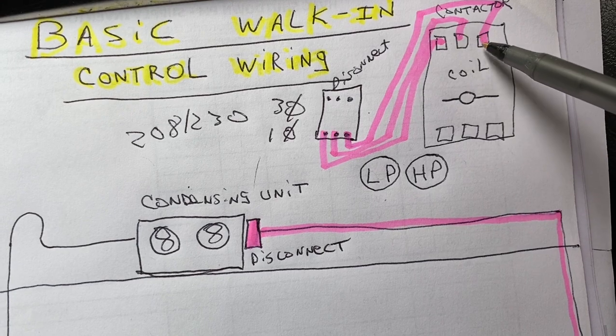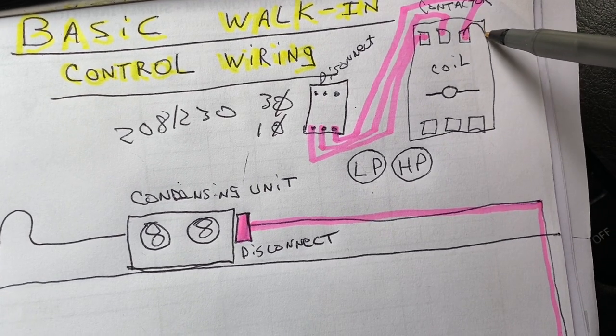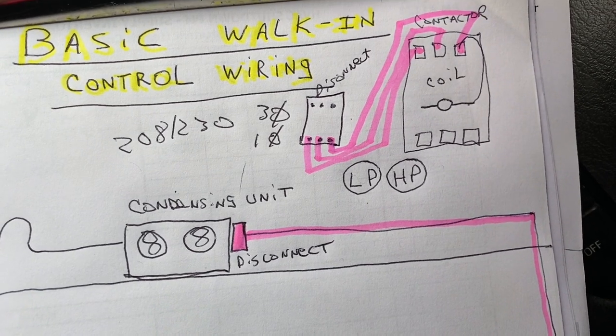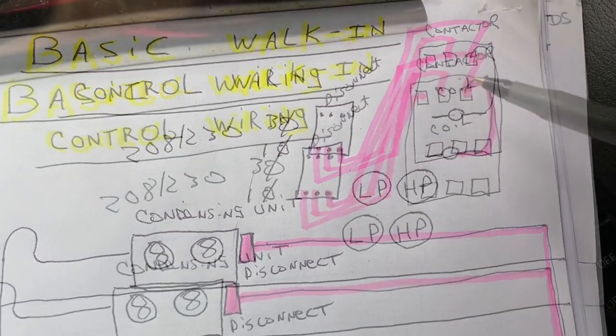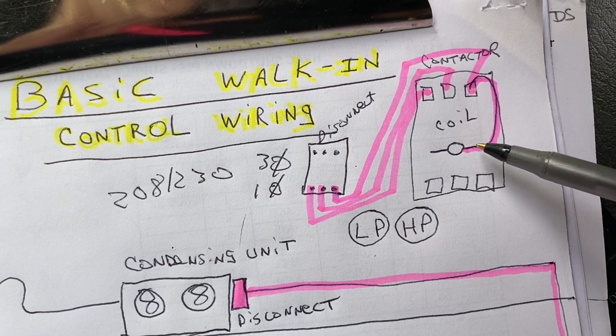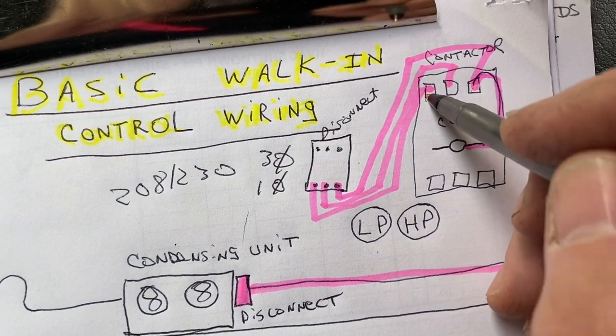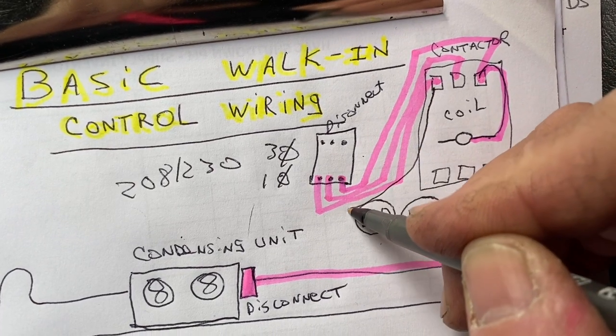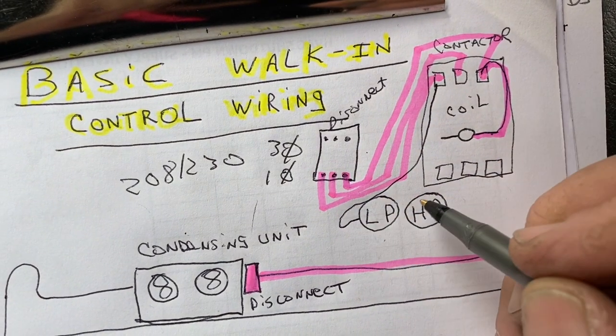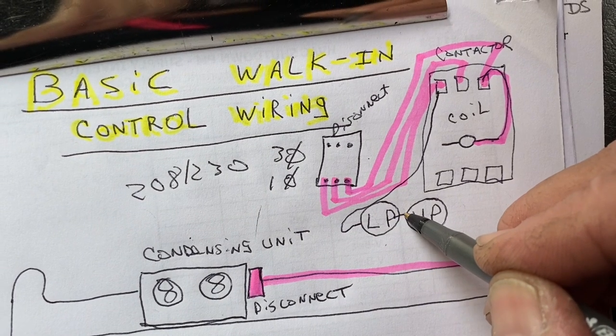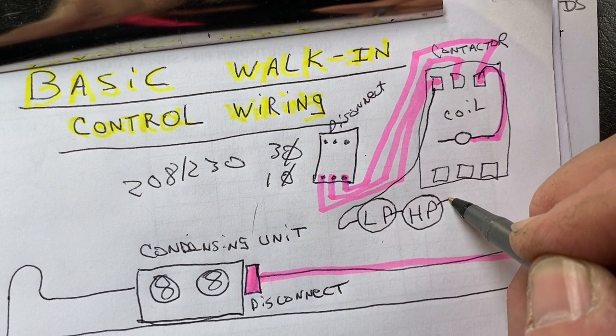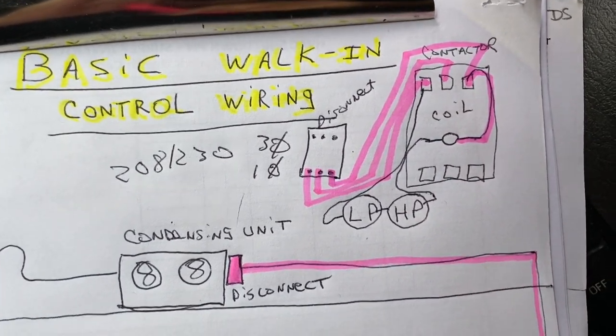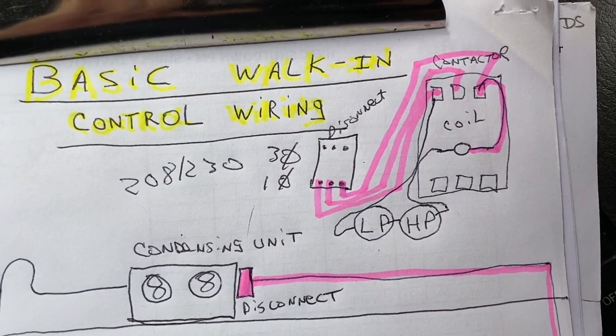So let's get those going next. Your coil in your contactor is right here. It's usually a 240 volt coil. Usually what we do is we just take one leg to half of the coil. That's how they do it. It's that simple. So we got that drawn in there. Half of the coil is fired off. Then we'll take one other leg through the low pressure control, through the high pressure control, and back to the other half of the coil.